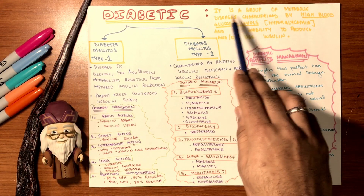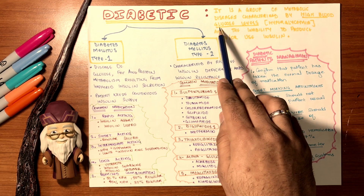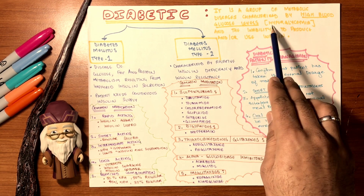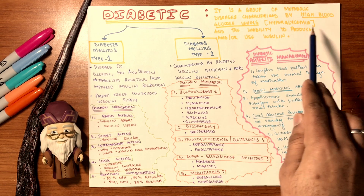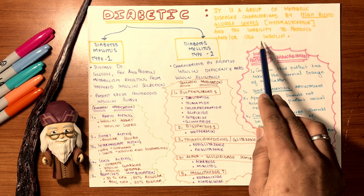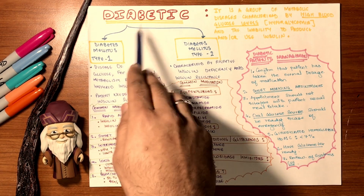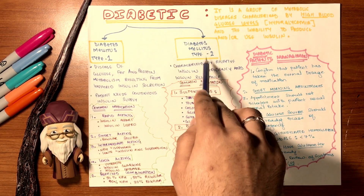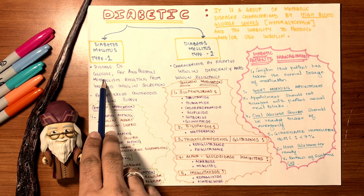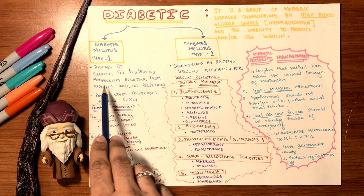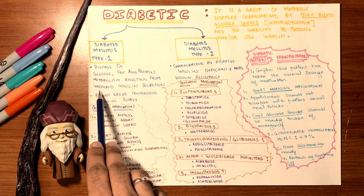Diabetes is a group of metabolic diseases characterized by high blood glucose levels, also known as hyperglycemia, and the inability to produce or use insulin, which breaks down glucose. Diabetes mellitus type 1 is a disease of glucose, fat, and protein metabolism resulting from impaired insulin secretion.